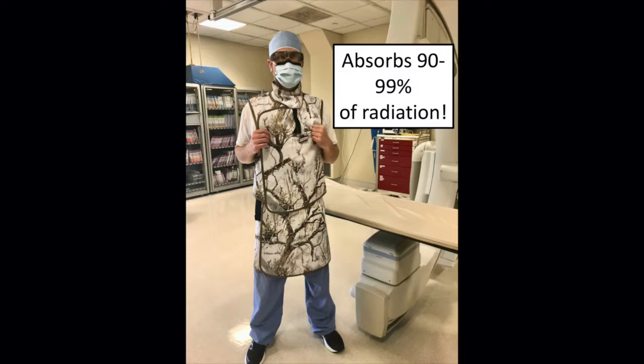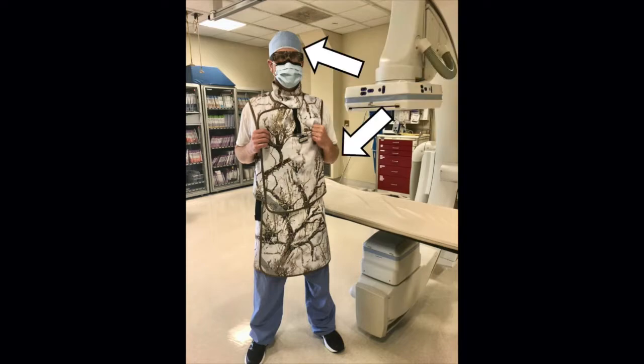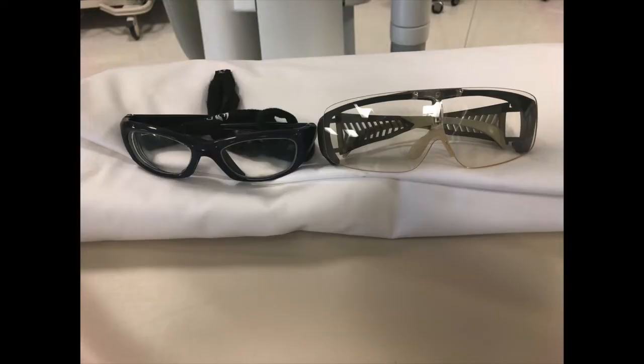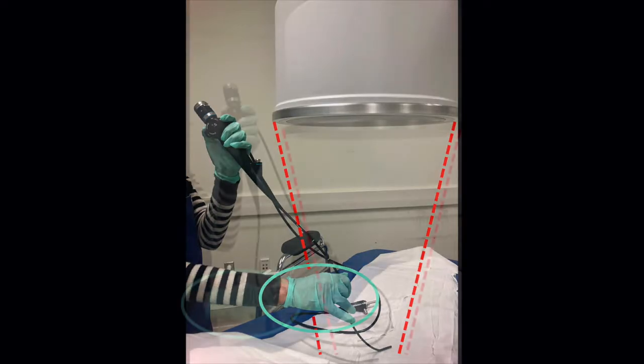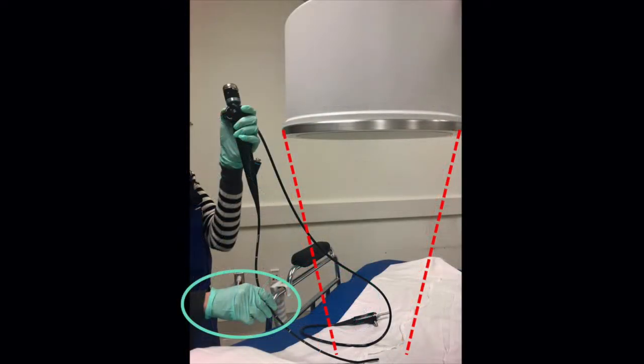Lead aprons or vests can absorb between 90 and 99 percent of radiation scatter, depending on the thickness of the lead. However, they leave the extremities and the head unprotected. Increased rates of cataracts have been documented in fluoroscopists, so lead glasses should be worn. Additionally, fluoroscopists should take care to avoid irradiation of their hands, which are at the highest risk for chronic exposure. Be sure to keep your hands out of the direct beam unless absolutely necessary for the procedure.